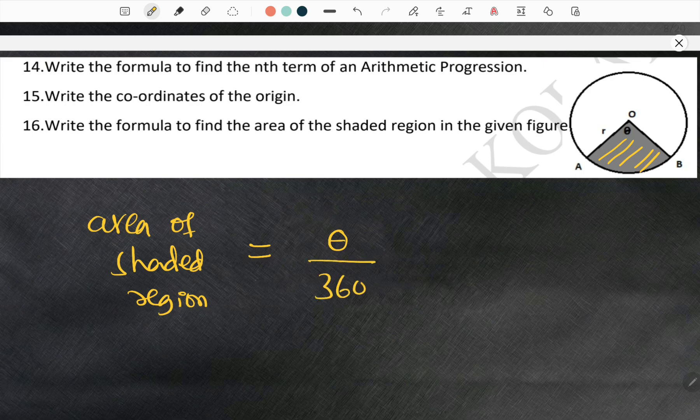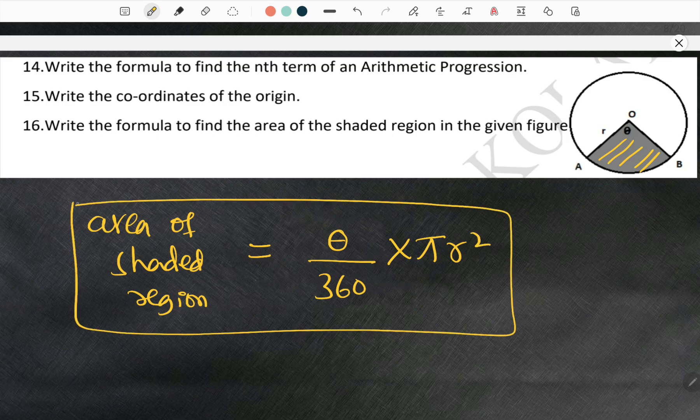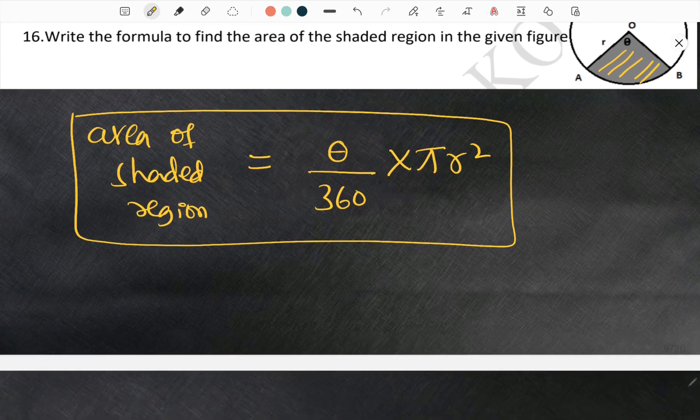Area of shaded region is equal to theta by 360 into pi r square, where the angle is theta and radius is r. So area of shaded region is theta by 360 into pi r square. That's it.